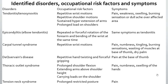This slide shows symptoms associated with occupational risk factors. To get a complete overview, a detailed task analysis is necessary. There are three columns: the disorder, the occupational risk factors, and the symptoms. Repetitive motions, wrist motions, and shoulder motions can cause tendonitis and tenosynovitis, with symptoms of pain, weakness, swelling, burning sensation or dull ache over the affected area. Tension neck syndrome may result from prolonged restricted posture of the neck, seen in desk and computer jobs, with pain as the primary symptom. There are other kinds of disorders with their respective occupational risk factors and symptoms.